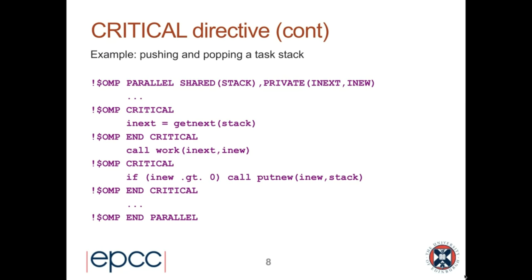In OpenMP, which has very good support for reduction operations, you often have a choice. If you have a simple update like adding into a shared variable, you can either declare it as a reduction variable — where every thread accumulates in a private copy and they're combined at the end — or use critical sections or atomics to achieve the same effect. For performance reasons, the reduction solution is usually better for simple scalar variables.